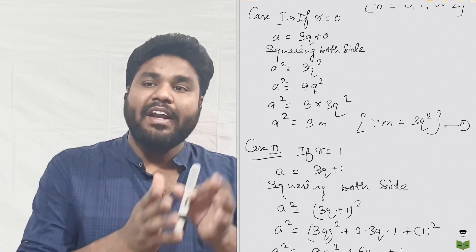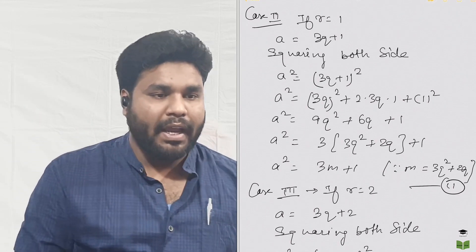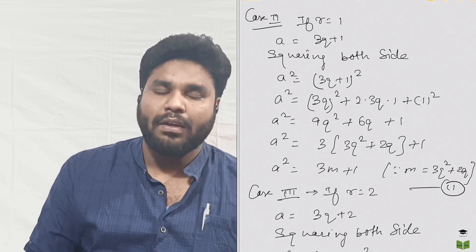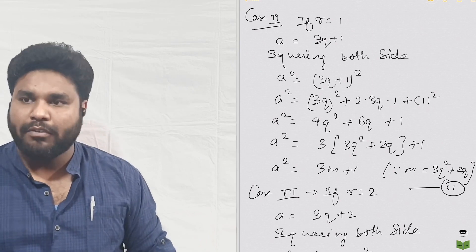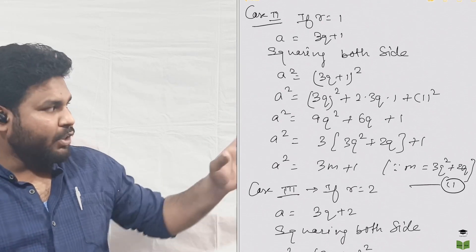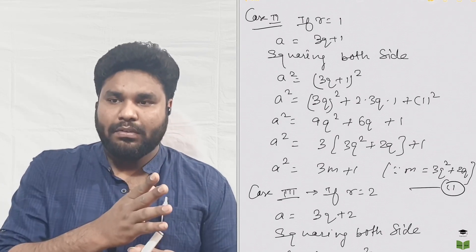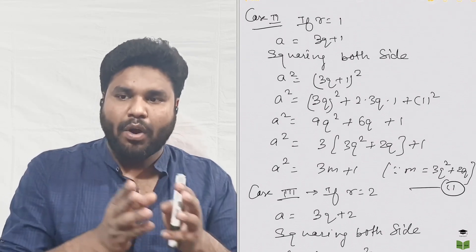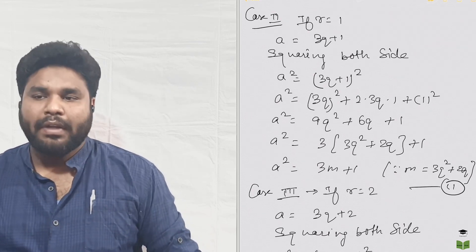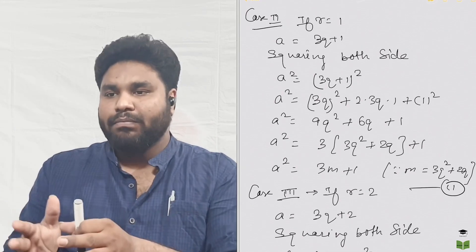Case 2: when R equals 1, then A equals 3Q plus 1. Squaring both sides, A squared equals (3Q plus 1) squared. Using the formula (A plus B) squared equals A squared plus 2AB plus B squared, we get A squared equals 9Q squared plus 6Q plus 1. Taking 3 as common from 9Q squared and 6Q, we get A squared equals 3(3Q squared plus 2Q) plus 1, which is A squared equals 3M plus 1, where M equals 3Q squared plus 2Q.